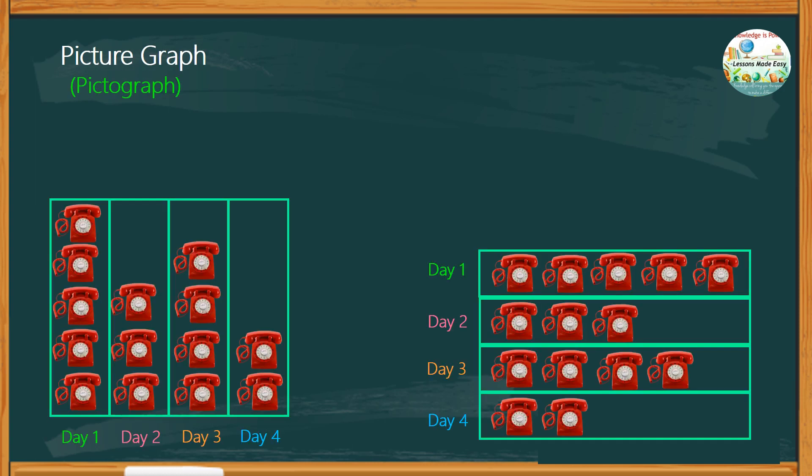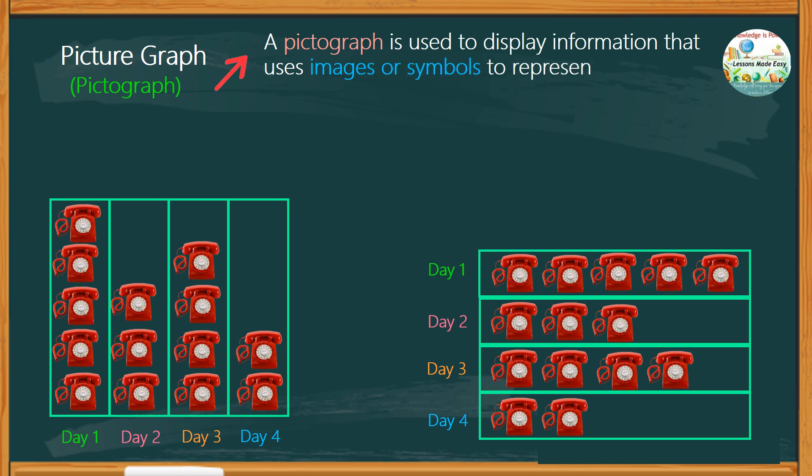What do you know about a picture graph or a pictograph? Take a look at the given example below. A pictograph is used to display information that uses images or symbols to represent data. This is the simplest form of graph where little pictures are used to represent numbers. We can do it vertically or horizontally just like in the given examples.